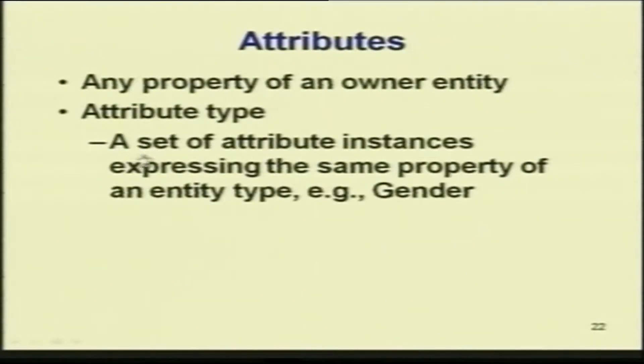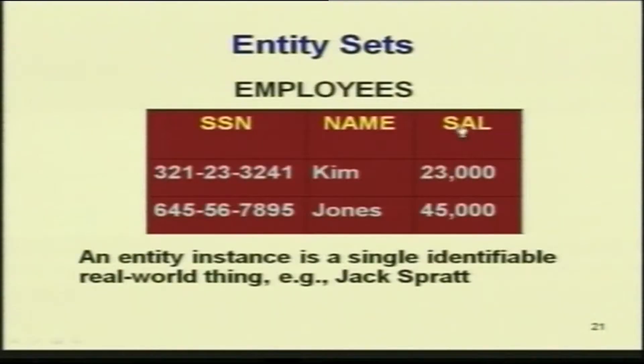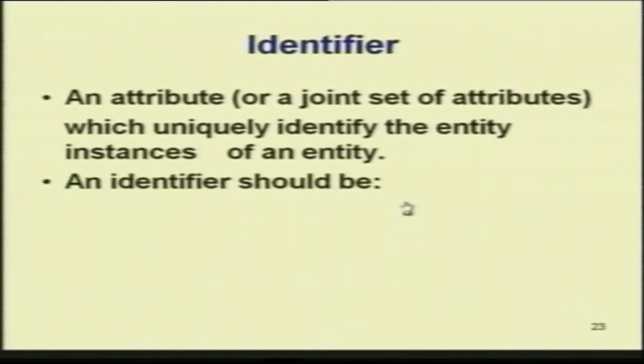Let us go to attributes. Any property of an owner entity — an attribute type is a set of attribute instances expressing the same property of an entity type. For example, gender can have male or female. An attribute instance is a particular property of an individual entity instance. Here salary is an attribute and 23000 and 45000 are the attribute instances. A single or joint set of attributes which uniquely identify the entity instances of an entity is called an identifier.